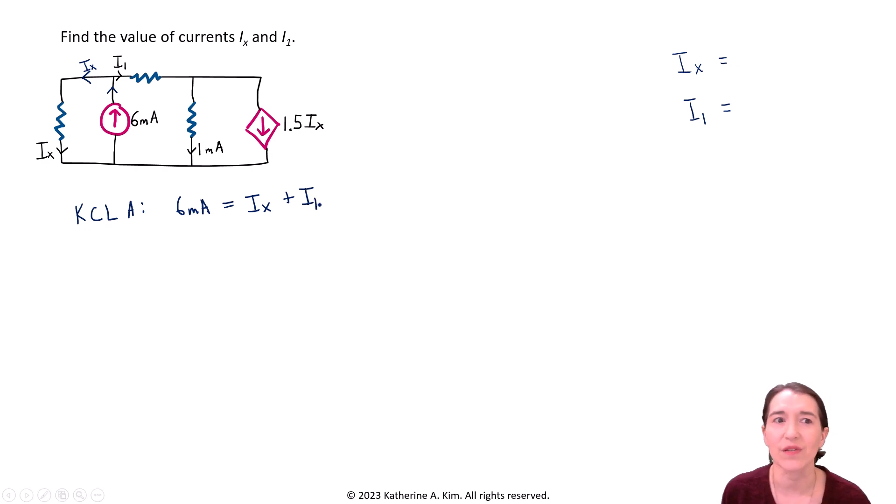So let's just write that out. So I'm just going to write six milliamps equals Ix plus I1. You say, but we don't know the values. Well, we're trying to solve for Ix and I1. So we just write them as variables for now. Okay.